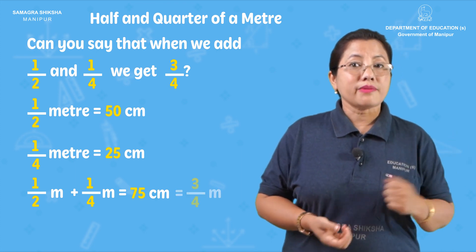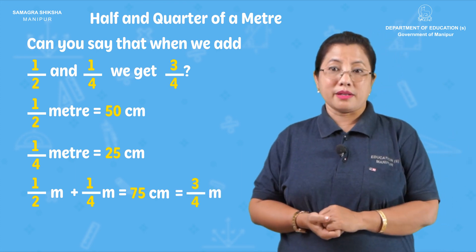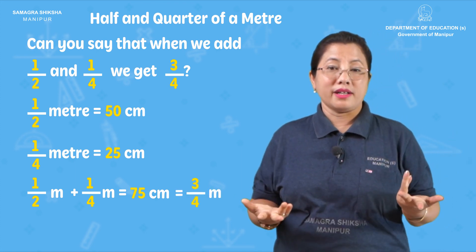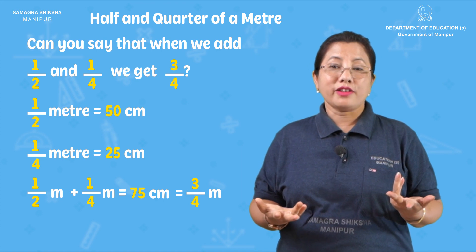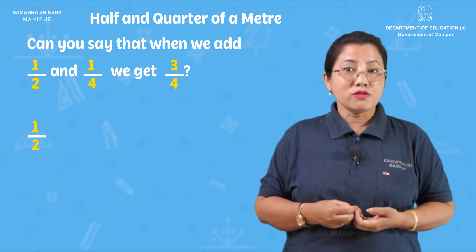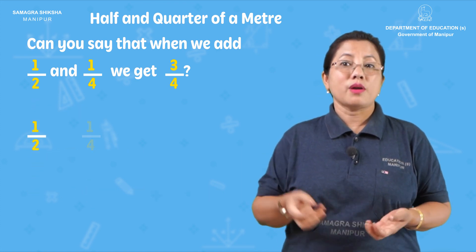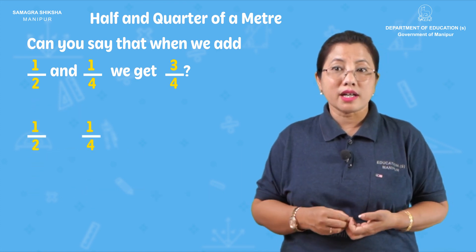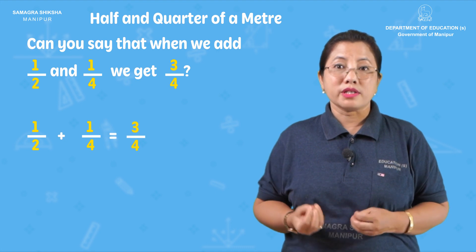Three by four of a meter: 1 by 2 plus 1 by 4 gives 3 by 4.